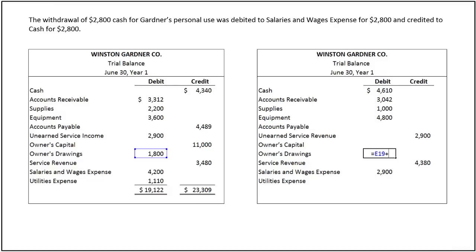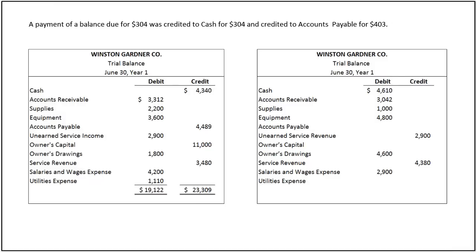We must also add $2,800 to owner's drawings to increase its balance to $4,600. A payment of a balance due for $304 was credited to cash for $304 and credited to accounts payable for $403. In this case, a wrong entry has been posted increasing accounts payable by $403. To rectify this error, we will deduct $403 from accounts payable. To complete this transaction, we must also deduct $304 from accounts payable. Thus, the final balance equals $3,782.